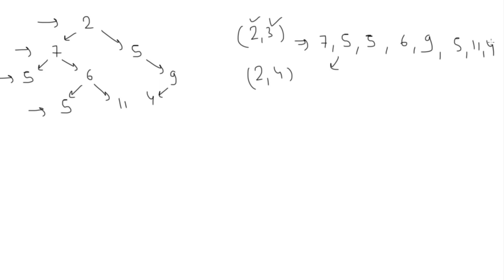So how will we solve this? Basically we do a level order traversal. In level order traversal we print all the values, so we will do a little tweak in that program. We'll keep track of which level we are at, and check if our current level is within the permissible range. If yes, we print the element; otherwise we won't.